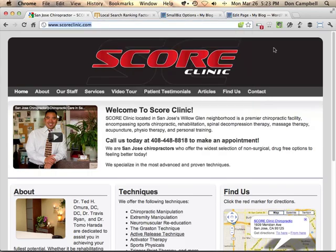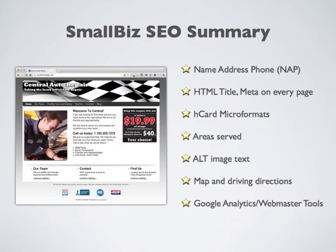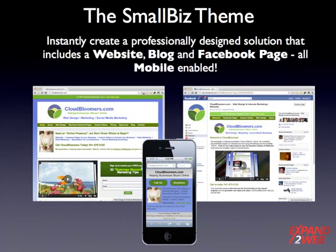The Small Biz Theme comes complete with SEO features like the name, address, and phone number on every page, an areas-served options panel for business information, Google Maps, homepage and meta information, Google Analytics, Google Webmaster Tools, h-card microformats, and all the WordPress SEO benefits. Google loves indexed WordPress sites.